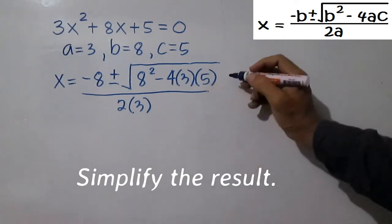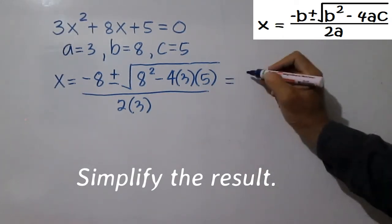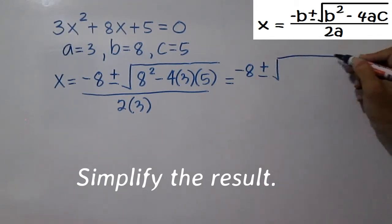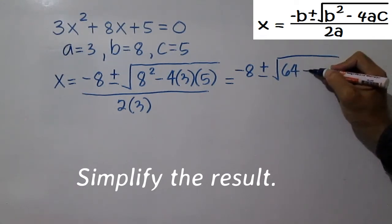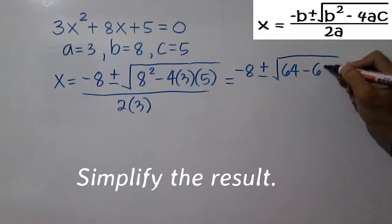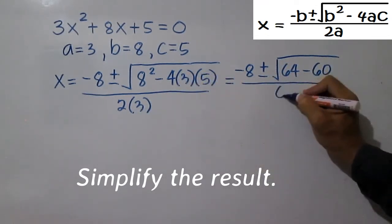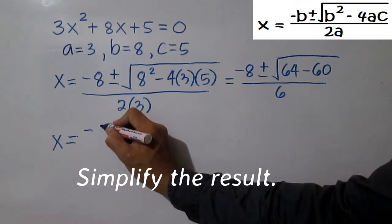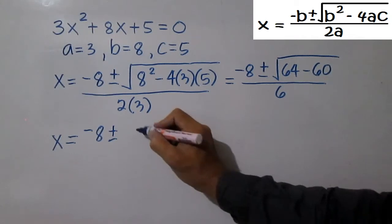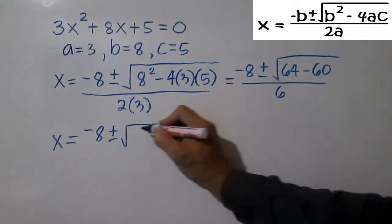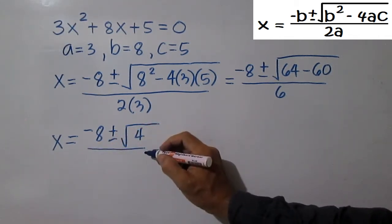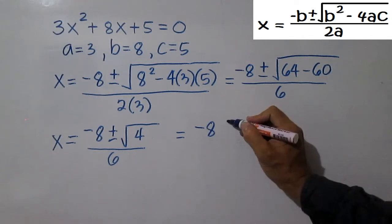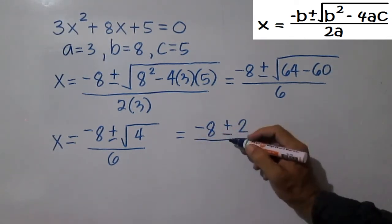Simplify the result. This is equal to negative 8 plus or minus square root of 64 minus 60, all over 6. x equals negative 8 plus or minus square root of 4 all over 6. This is equal to negative 8 plus or minus 2 all over 6.